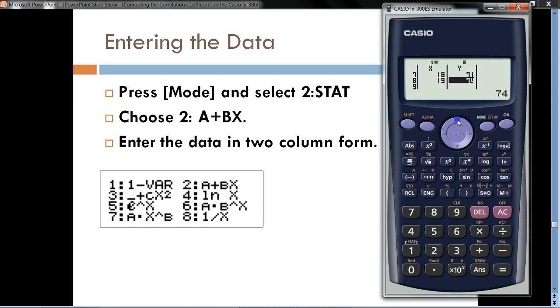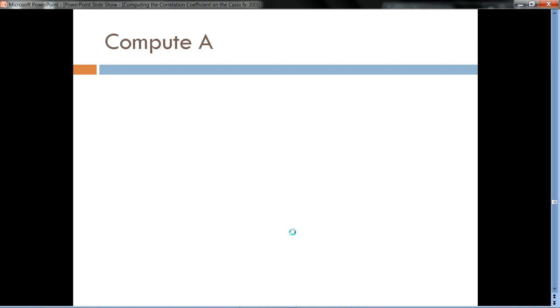Okay, so here we are back, and I put in the data in two-column form in our Casio calculator here. And our next step, then, is to compute the y-intercept, a.